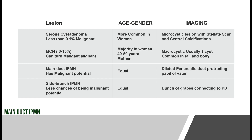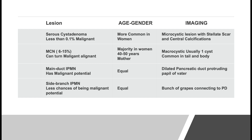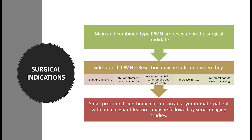Similar to mucinous neoplasms, IPMN can turn malignant, so whenever you encounter a main duct type of IPMN, it should be resected. Side branch IPMNs have the least malignant potential among all cystic neoplasms of the pancreas. Main and combined types of IPMN should be resected. Side branch IPMN can be considered for resection when the lesion is greater than 3 centimeters, the patient has pain or pancreatitis, there is accompanying bile duct obstruction, sudden increase in size, or mural nodules or wall thickening on imaging.